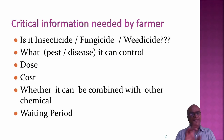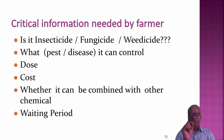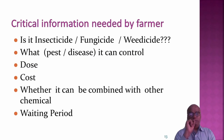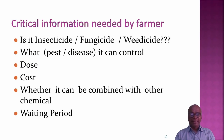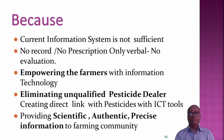What is the critical information needed by the farmer? First, we want to know whether it is an insecticide, fungicide, or herbicide. What pest can it control? The dose, the cost, whether it can be combined with other chemicals, and what is the waiting period — this is the critical information needed by the farmer.